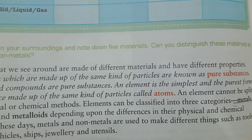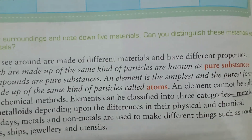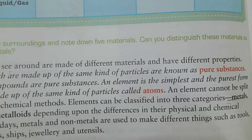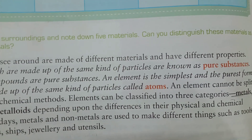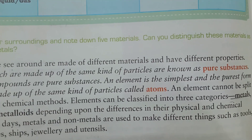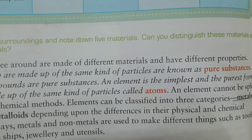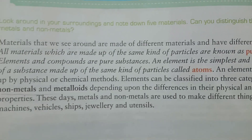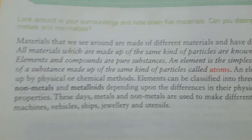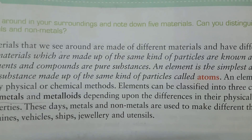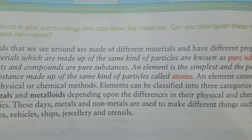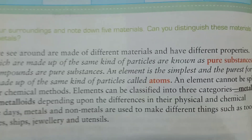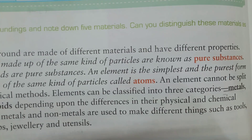If we burn a paper, it will change — the ashes cannot change back again. So that is a chemical change. After that, these metals and non-metals are used in different things, such as to make metal mining.